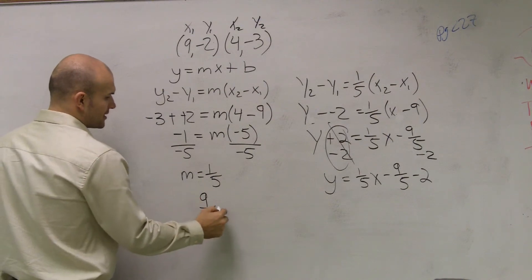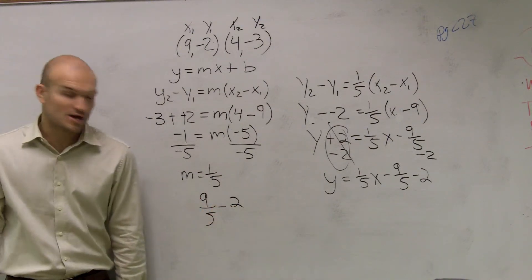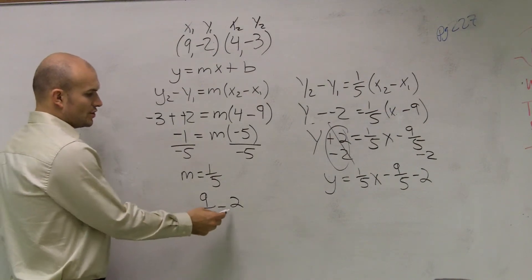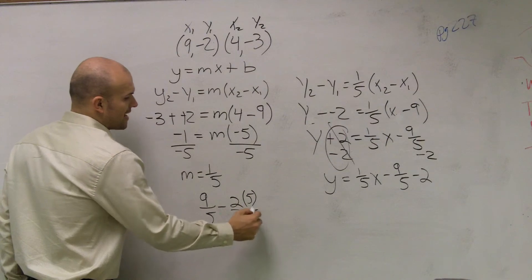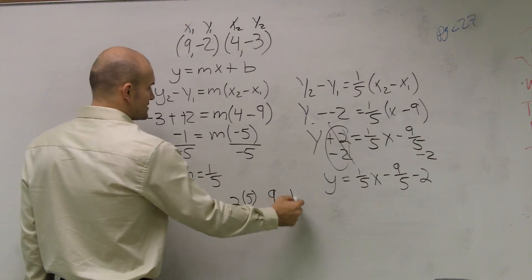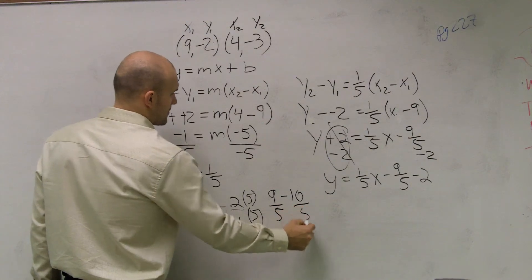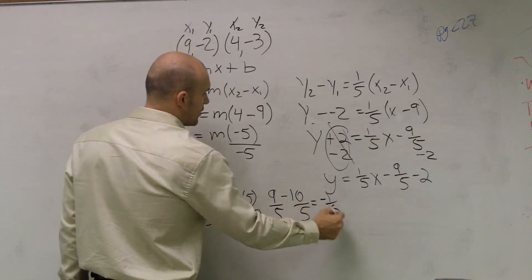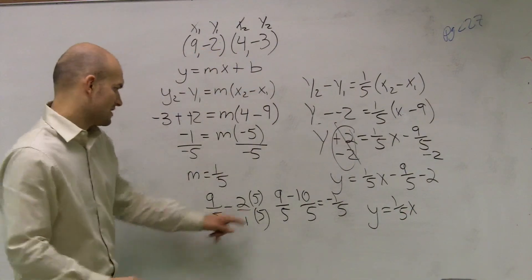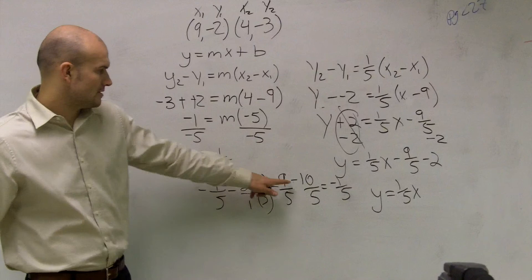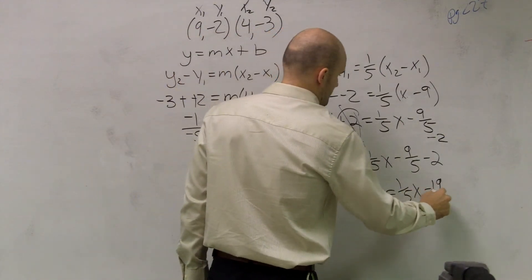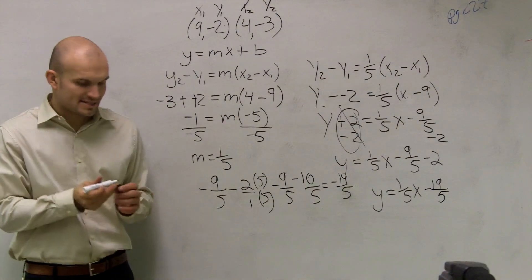A lot of you guys are probably freaking out saying you don't remember how to subtract fractions. 9 fifths minus 2 — I need to write this with a denominator of 5, because you have to have the same denominators. So 2 over 1 multiplied by 5 over 5: 5 times 1 is 5, 2 times 5 is 10. So I'm left with negative 9 minus 10 — wait, that's a negative 9, my bad. So negative 9 minus 10 is negative 19. So y equals 1 fifth x minus 19 over 5.